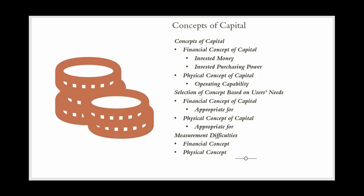For example, ABC Corporation has assets worth $5 million and liabilities worth $2 million. The net assets or equity of the company are $3 million ($5 million minus $2 million). This $3 million represents the financial capital of ABC Corporation, indicating the total invested money. The invested purchasing power perspective considers the purchasing power of the money invested, adjusting for inflation or changes in the value of money over time. This ensures that capital reflects its real value, not just its nominal value.